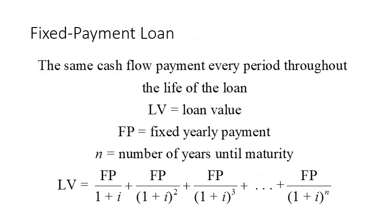For a fixed payment loan, we have the same cash flow payment every period throughout the life of the loan. If you get a loan from the bank, they will calculate the interest rate, add it to the value of the loan, and divide this over the whole life of the loan, or maturity, with fixed payments paid yearly. The loan value equals this fixed payment divided by the discount in each case: the power is 1 for the first year, 2 for the second, and n for the last year.